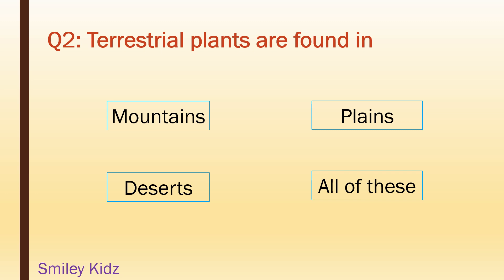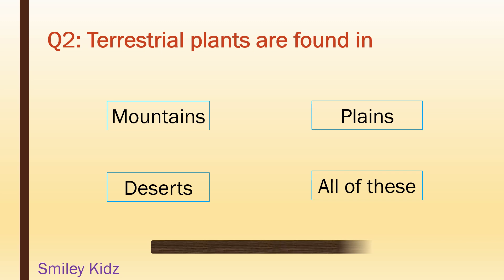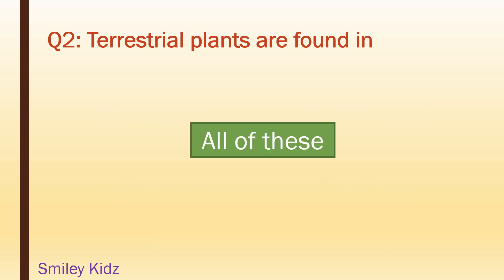Terrestrial plants are found in: mountains, plains, deserts, all of these. Your time starts now. Your time is up. And the right answer is all of these.